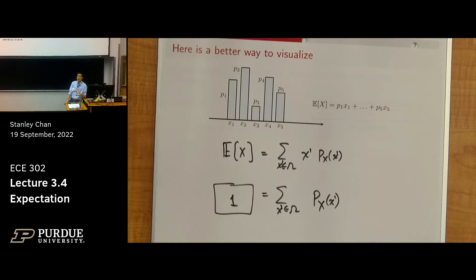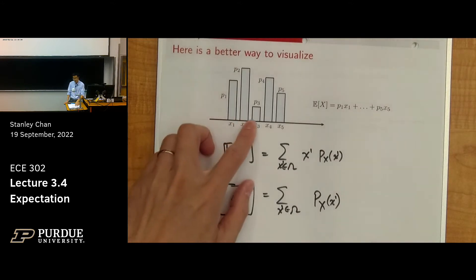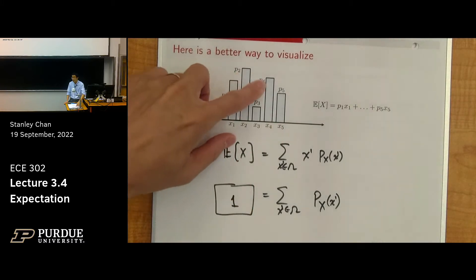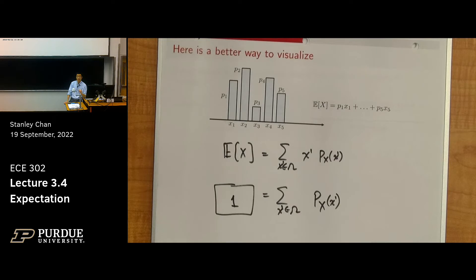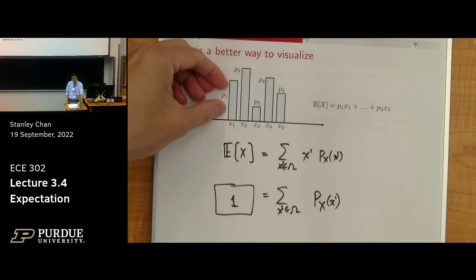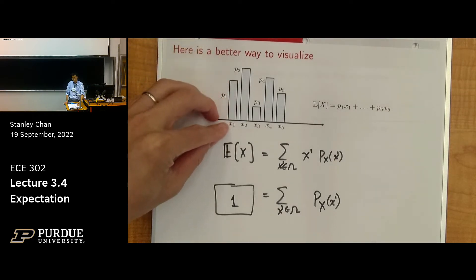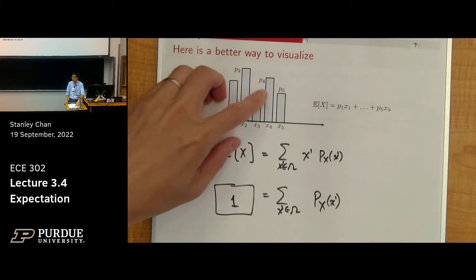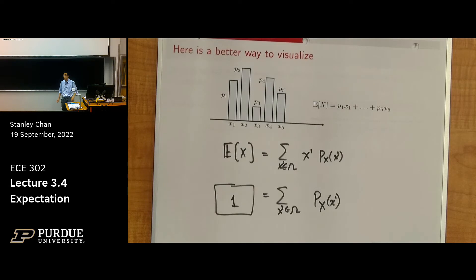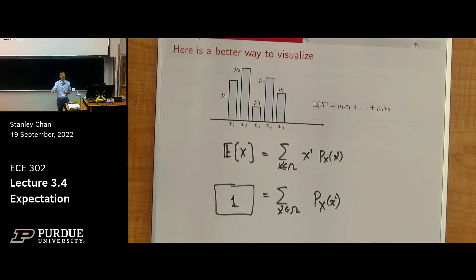We can also think of it as a weighted average. You have all five states, and all these weights sum to one. So you're allocating, say, 20% for state x1, 30% to state x2, and so on. You do this kind of exercise all the time — I give you exam scores, homework scores, midterm scores, and say homework counts for 20%, midterm counts for 30%. Then you calculate the weighted average.